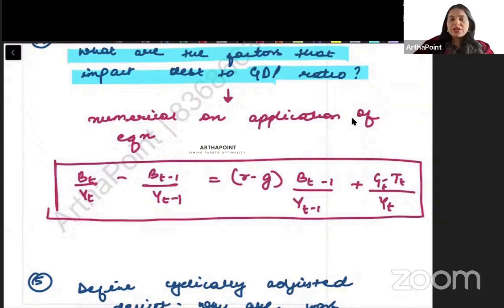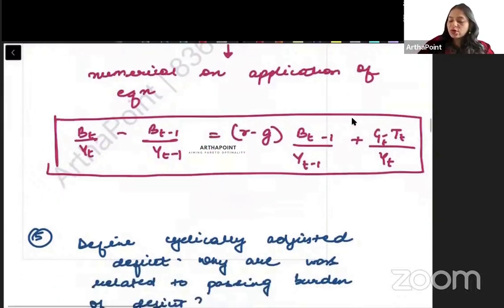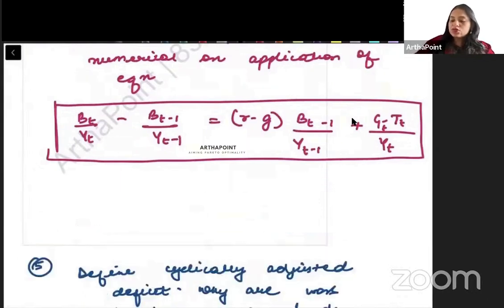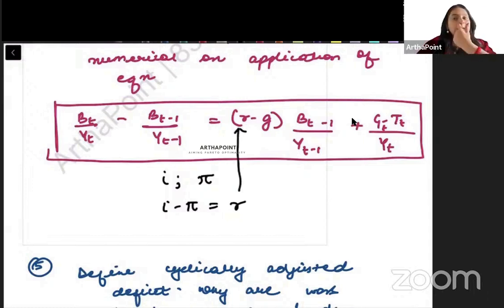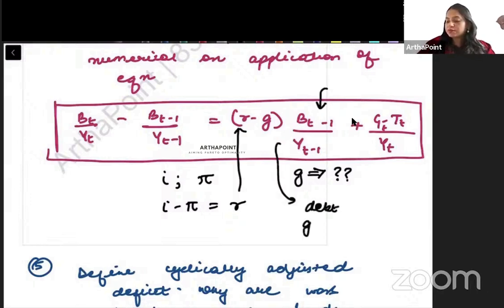Jahan pe bhi mein likhari yun numerical on application. It means that a numerical can be asked. So here the numerical is going to be on your this. Toh is case mein what they will go ahead and do na. They may go ahead and give you some value of nominal interest rate inflation. Toh nominal minus inflation karke you will find out the real interest rate. They may go ahead and they may give you some value of G. Kuch ek G dhe denge which will be growth rate. They will give you last year's debt to GDP ratio.